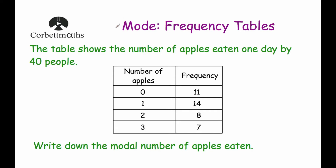So first of all, what is the mode? The mode is the most common — so if you had a list of numbers, the mode would be the most common one. We've been asked to find the modal number of apples eaten. The word mode changes to modal because it's describing the number of apples eaten, but it means the same thing — the most common one. So looking at the frequency column, the highest frequency in the list 11, 14, 8, and 7 is 14. The number that happens the most is 1, so there are 14 ones, meaning the mode is 1.